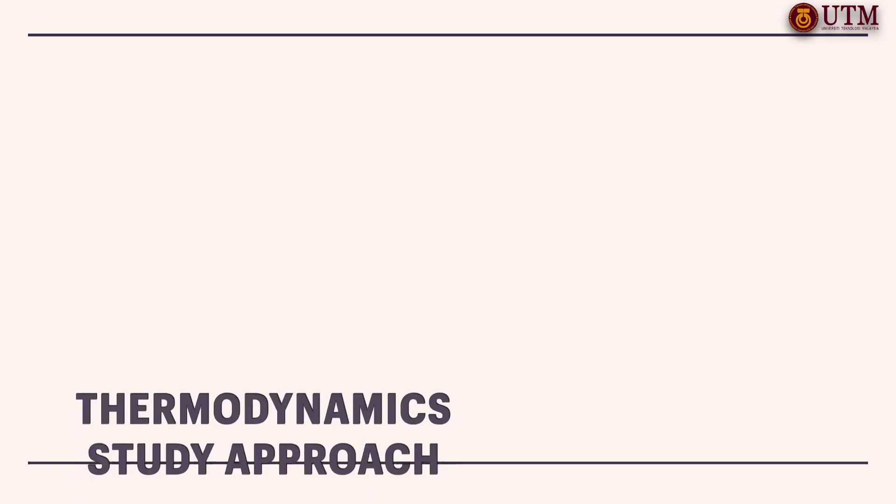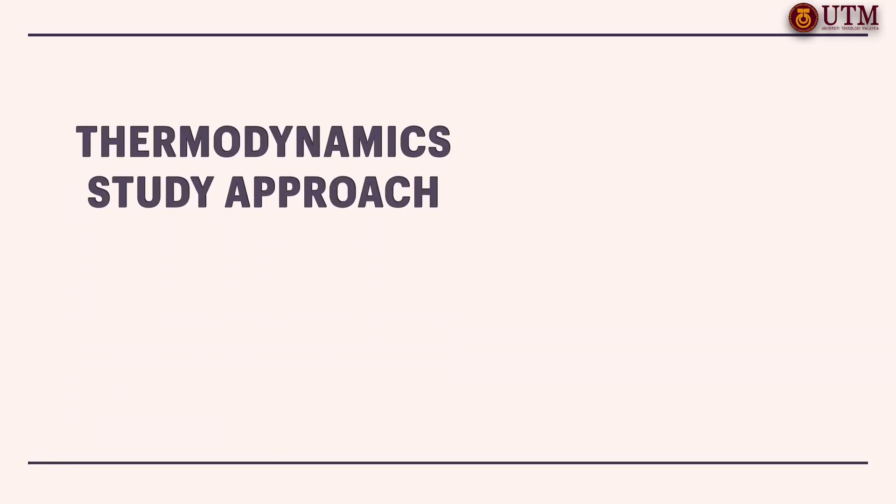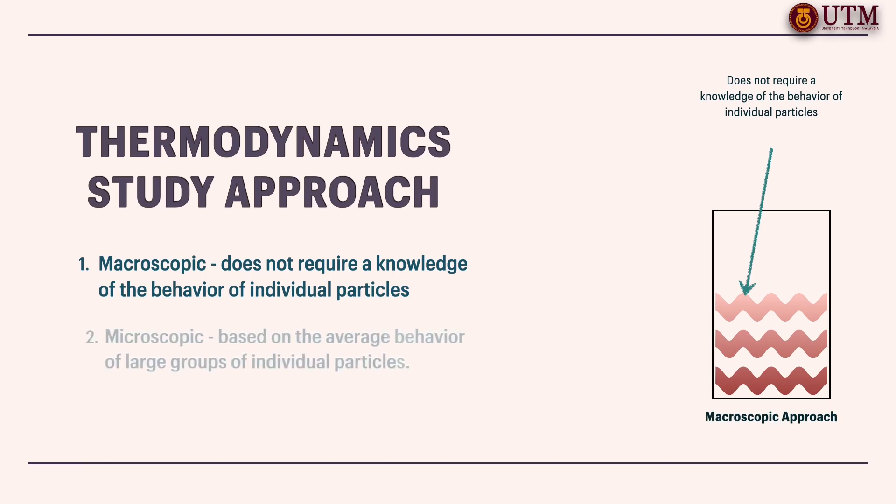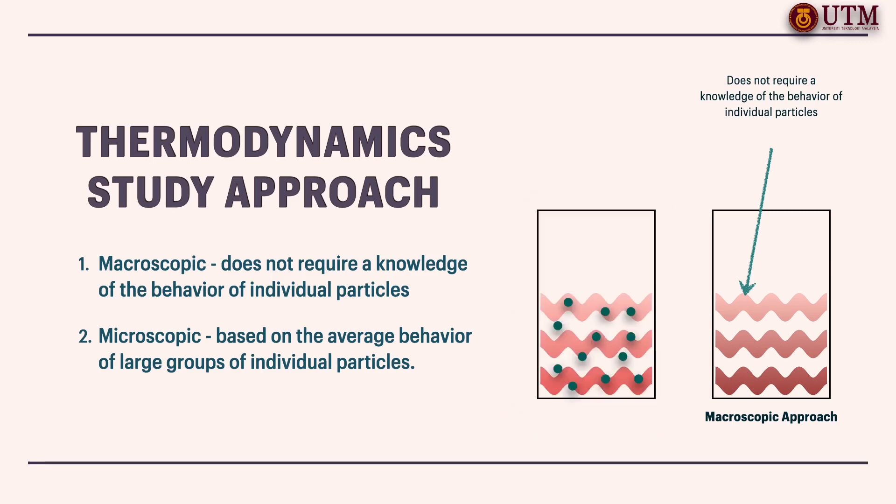There are two types of approaches to study thermodynamics. The first approach is the macroscopic. This macroscopic approach does not require a knowledge of the behavior of individual particles. Sometimes, it is called classical thermodynamics. It provides a direct and easy way to the solution of engineering problems. A more elaborate approach based on the average behavior of large groups of individual particles is called microscopic approach or statistical thermodynamics.